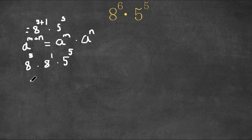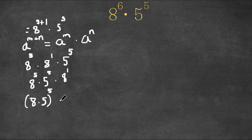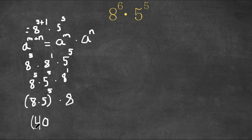Now we're going to rewrite this as 8 to the power of 5 times 5 to the power of 5 times 8 to the power of 1. We can rewrite these two as 8 times 5, raised to the power of 5, times 8. So now 8 times 5 is 40, giving us 40 to the power of 5 times 8.